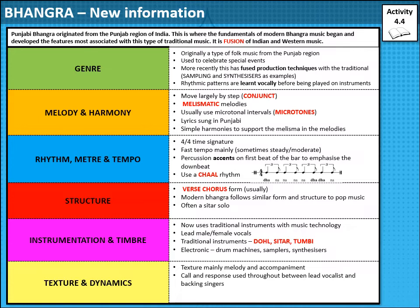On the electronic side, they also use drum machines, samplers, and synthesizers. Looking at texture and dynamics: the texture is mainly melody and accompaniment, with a lot of call and response — which lends itself well to the tradition of learning vocally and passing on rhythms. Dynamics-wise, it is usually very loud, though there will be moments where it comes down. It is still meant to be a celebratory style of music.